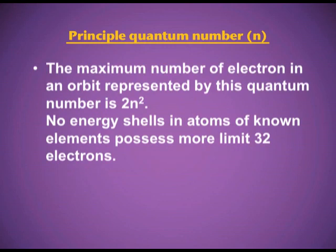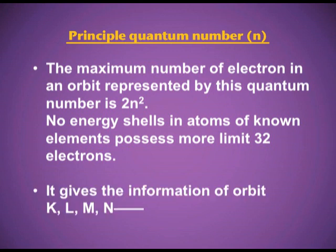The maximum number of electrons in an orbit represented by this quantum number is 2n². No energy shell in atoms of known elements possesses more than 32 electrons. It gives the information of the orbit — that is K, L, M, and N. Angular momentum can also be calculated using the principal quantum number.